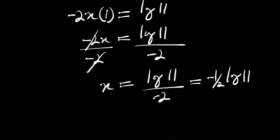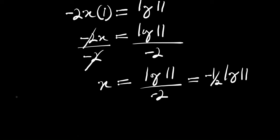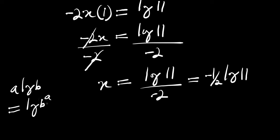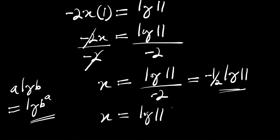So let's proceed. Now if you have a times log of b, this actually equals log of b to the power of a. So let's apply this identity here. That means we are going to have x equals log of 11 to the power of negative 1 over 2.